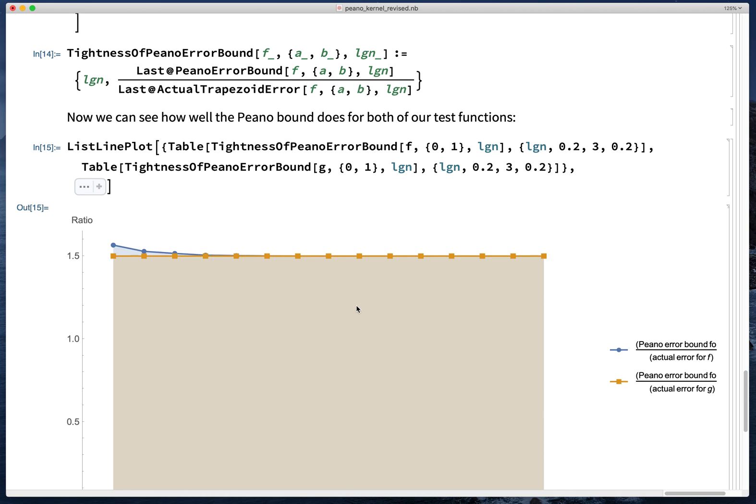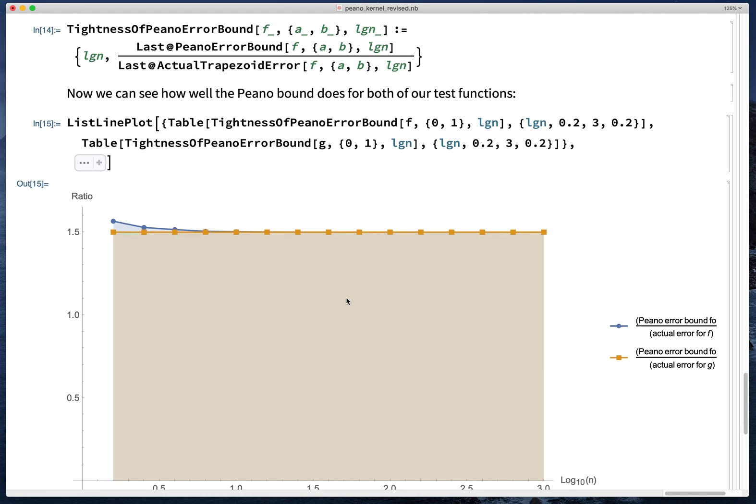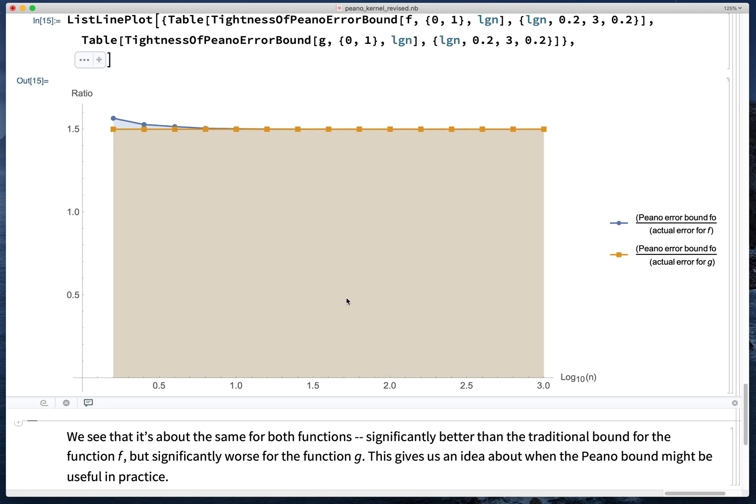But it's considerably worse for the parabolic function g, which has constant second derivative. So what this tells you is that neither bound always wins. But when you have a function with a variable second derivative, or when you know the sign of the second derivative, the Peano bound may be easier to apply, better, or both.